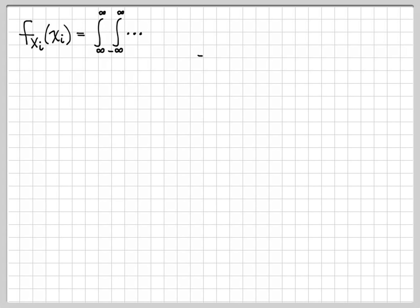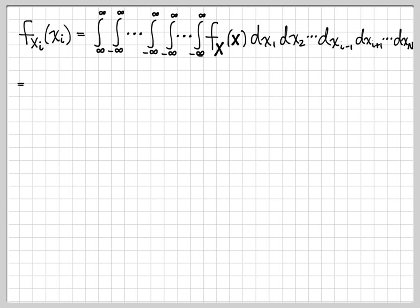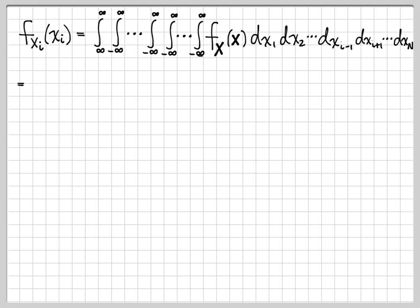We can compute the density function of the random variable x_i by performing n minus 1 integrations. The first integrals go from 1 to i minus 1, and then these go from i plus 1 all the way up to n. In the notation with the dx's, it's dx_1, dx_2, all the way up to x_{i-1}, then we skip the i-th dimension, and then go i plus 1 all the way up to the n-th dimension. So this is a collection of n minus 1 integrals that integrate everything except the i-th dimension.